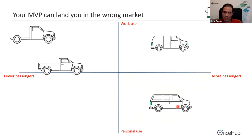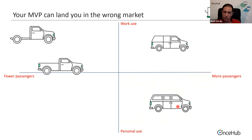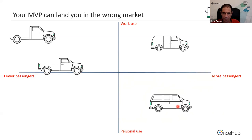When planning a minimum viable product, there's a tendency to ask what features can be reduced. As you reduce features, it may make sense product-wise, but you need to understand what it does to you market-wise. Reducing a feature may get you into the wrong market. The cost of getting out of that market later and entering the market you actually want may be higher than just aiming for the right market initially with a bigger MVP scope.